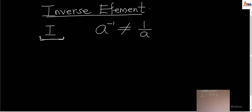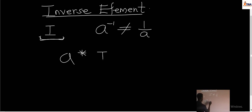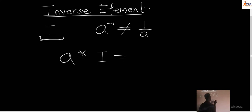For the inverse element, for any time you have a variable A in an operation with the inverse element I, the product — that is the value formed — must be the identity element. That is what the inverse element talks about, and that is how we can actually get the inverse element.